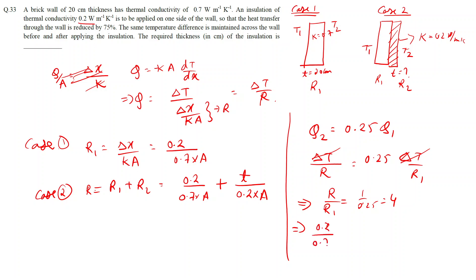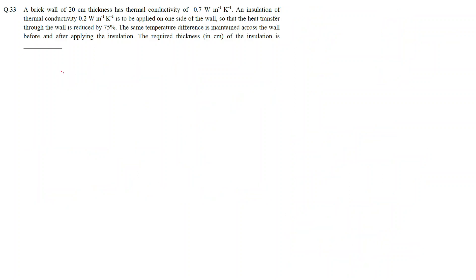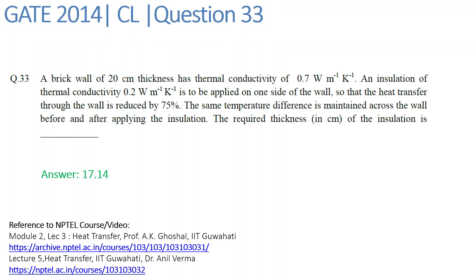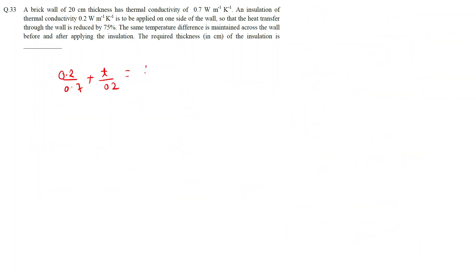Replacing R and R1: the quantity (0.2 upon 0.7 plus t upon 0.2) divided by (0.2 upon 0.7) equals 4. The area terms cancel. Simplifying: 0.2 upon 0.7 plus t upon 0.2 equals 4 times 0.2 upon 0.7. So 5 times t upon 0.2 equals 3 times 0.2 upon 0.7, giving thickness t equals 6 upon 35.